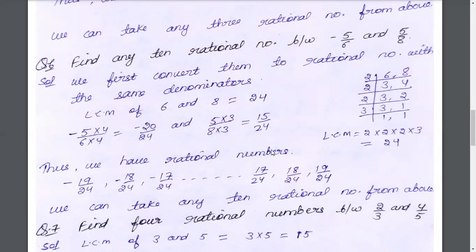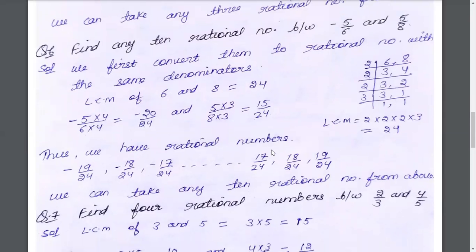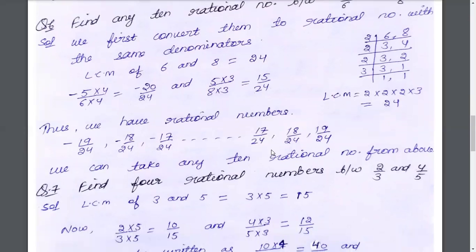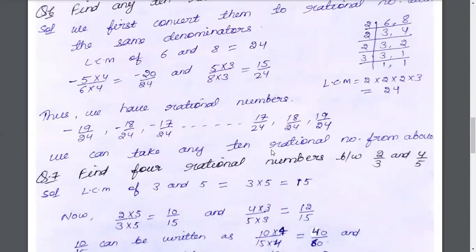We find the LCM of 6 and 8, which gives us 24. So we multiply: 5 multiplied by 4 and 6 multiplied by 4 gives minus 20 by 24. The other number: 8 multiplied by 3 and 5 multiplied by 3 gives 15 by 24. So our two numbers are minus 20 by 24 and 15 by 24. We need 10 numbers between them: 19 by 24, going from minus values up to positive.